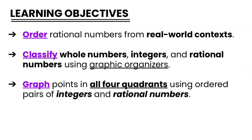The learning objectives for the second part of this unit include ordering rational numbers from real world context, although you will really just be finishing up this TEKS and assessing and going back and clarifying some things that maybe were not clear the first time around. Then you will go into classifying whole numbers, integers, and rational numbers using graphic organizers. This is something that is new to the grade level, especially in terms of integers, because students have not dealt with negative numbers prior to 6th grade.